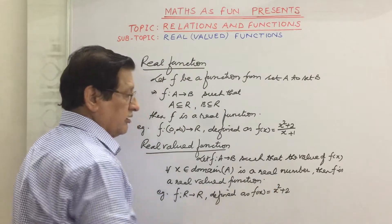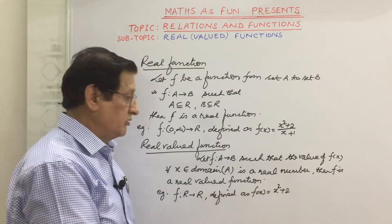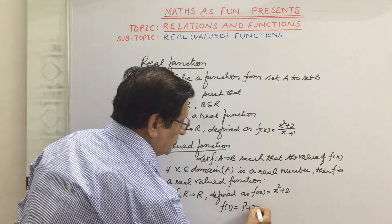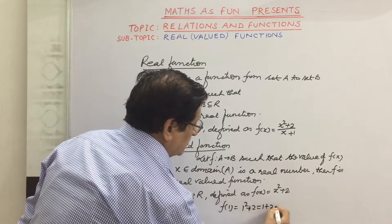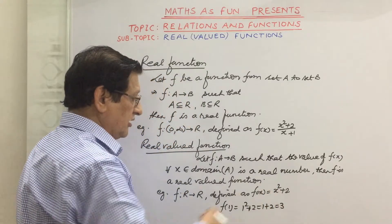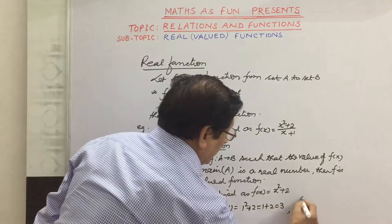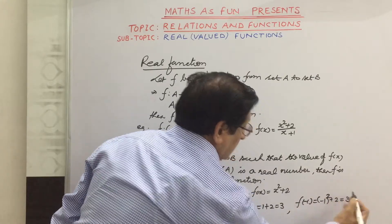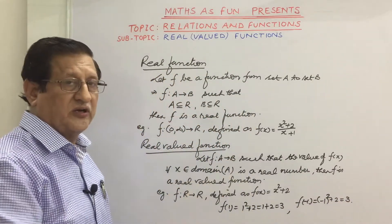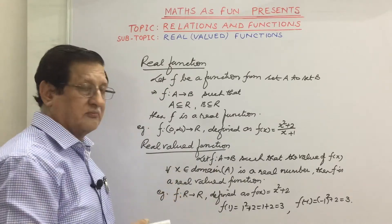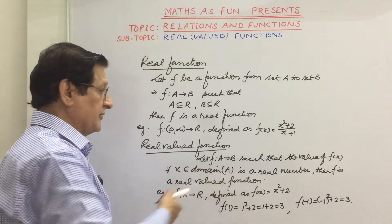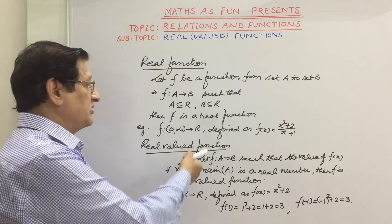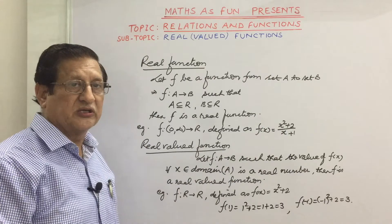If we take any real number x, for instance f(1) = 1² + 2 = 3, which is a real number. f(−1) = (−1)² + 2 = 3, also a real number. For any real number x, f(x) is always a real number, so this is a real valued function.